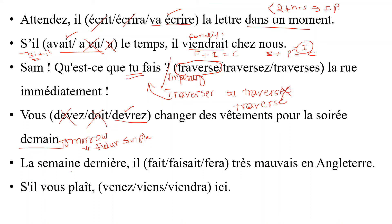Next: 'La semaine dernière' means 'last week' — a clue for the past tense. It's talking about a weather condition. Weather doesn't last one second; it continues for a period like a month or season. Things continuous in the past use the imparfait. 'Fait' is present, 'fera' is simple future — both wrong. 'Faisait' is the imparfait, so that is the answer.